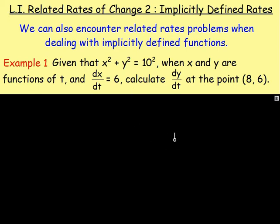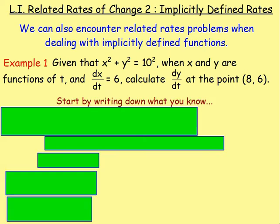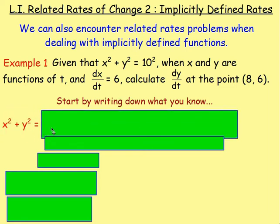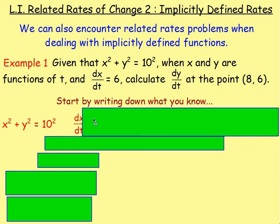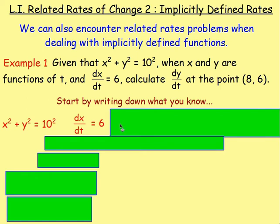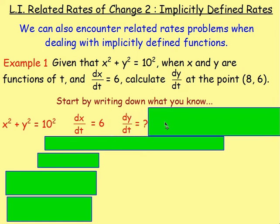With Example 1: x² + y² = 10², when x and y are functions of t, and dx/dt = 6, calculate dy/dt at the point (8, 6). The same as the last lesson, I would re-read the question and start writing down everything that you know. We're told x² + y² = 10², x and y are functions of t, and dx/dt = 6. We want dy/dt — that's our unknown. And we're told the point (8, 6), so when x = 8, y = 6.